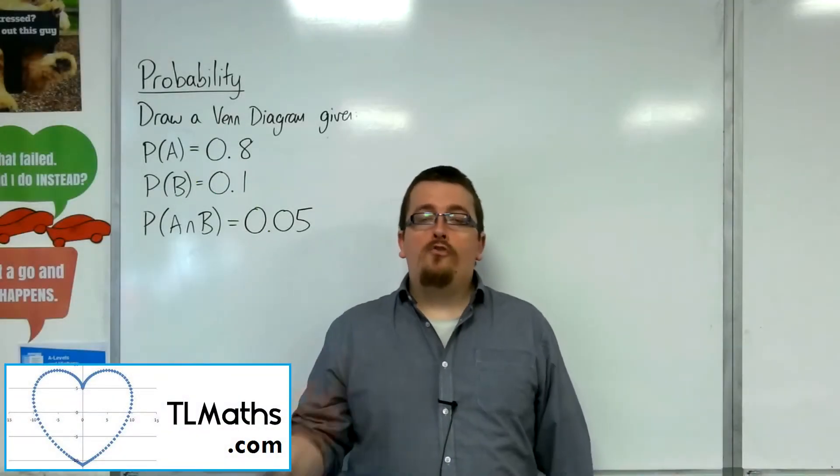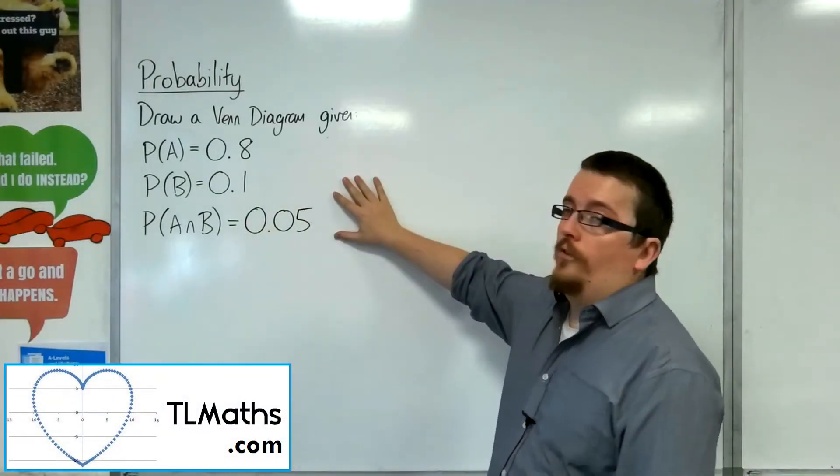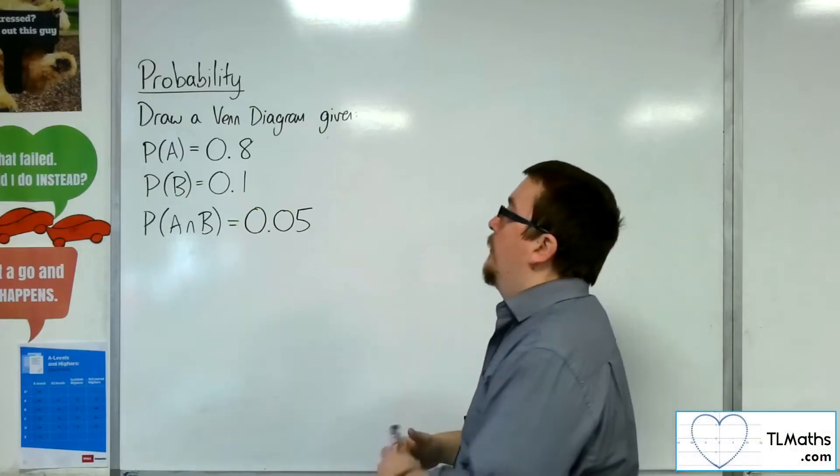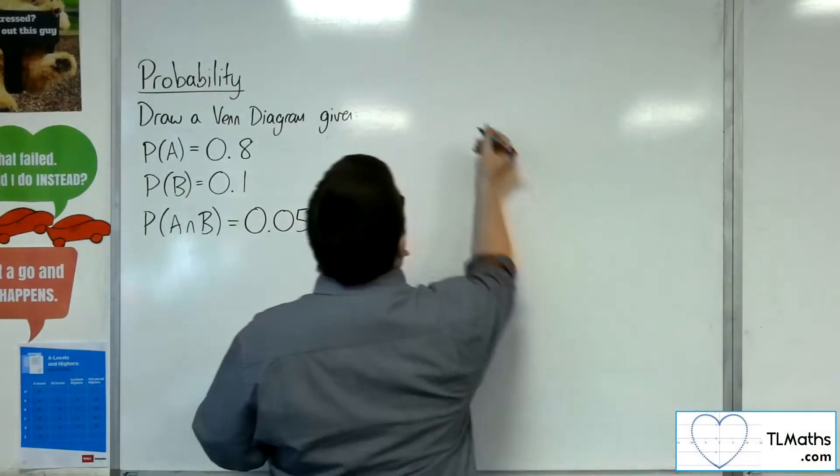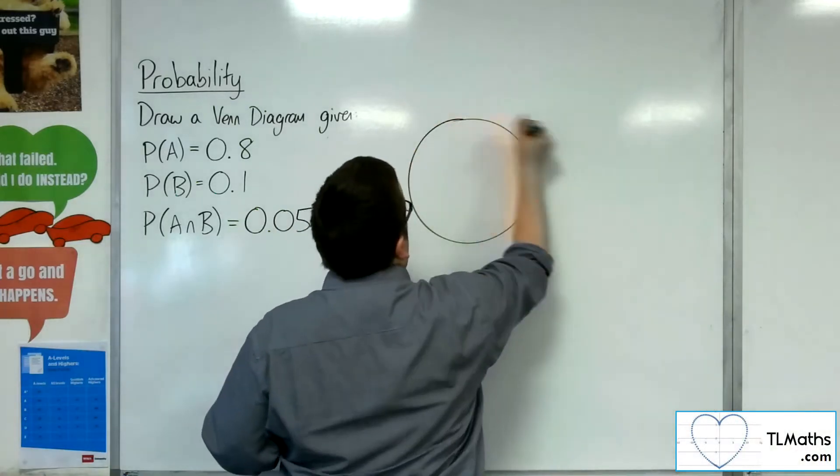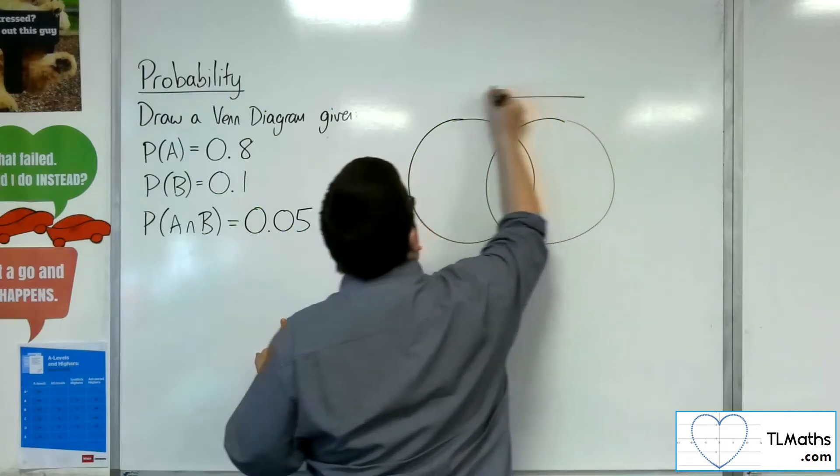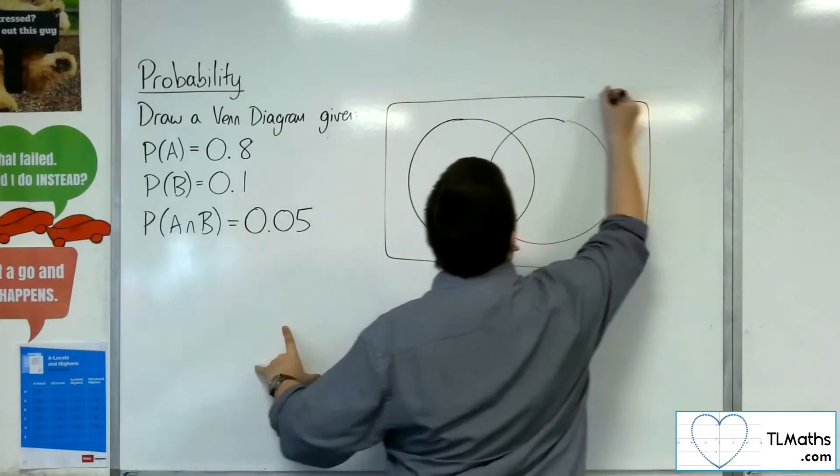You may be asked to draw a Venn diagram given some probabilities. So really what we want to do is go straight in and get a Venn diagram ready for A and B.